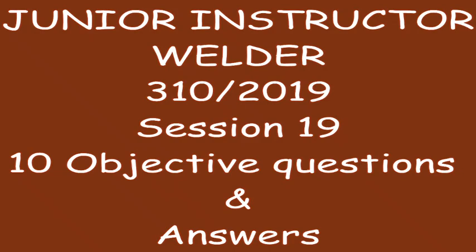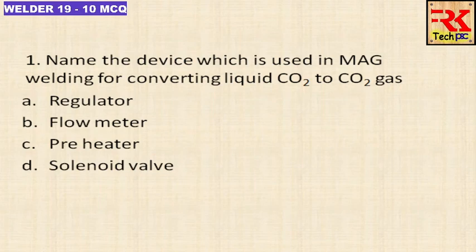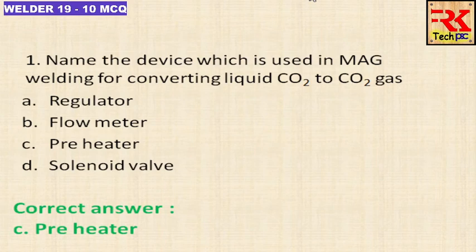First question: Name the device which is used in MAG welding for converting liquid CO2 to CO2 gas. In MAG welding, we use shielding gas as CO2 gas — that is in the gas state. The components are: regulator, flow meter, preheater, solenoid. The answer is preheater, which converts liquid CO2 to CO2 gas.